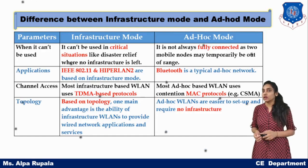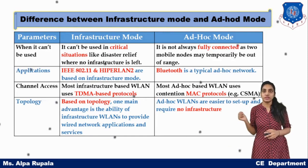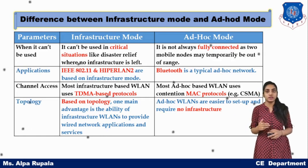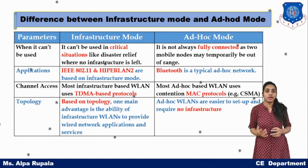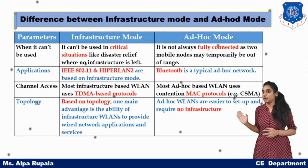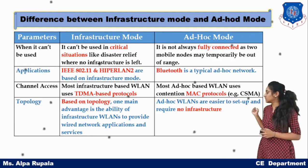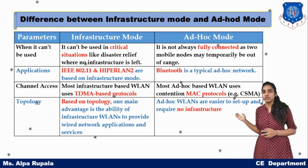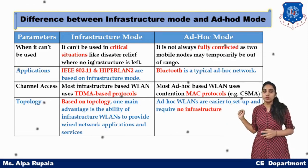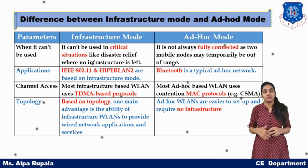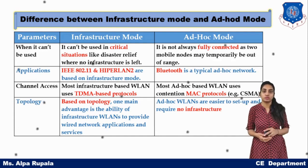Infrastructure mode cannot be used in critical situations like disasters because it requires physical infrastructure, but ad hoc mode is fully flexible and can be used everywhere. Examples: IEEE 802.11 and HiperLAN 2 use infrastructure mode, while Bluetooth is an example of ad hoc mode. For channel access, infrastructure mode uses TDMA-based protocols while ad hoc mode uses MAC protocols. In terms of topology, infrastructure mode is centralized around the AP, whereas ad hoc mode requires no predefined topology.